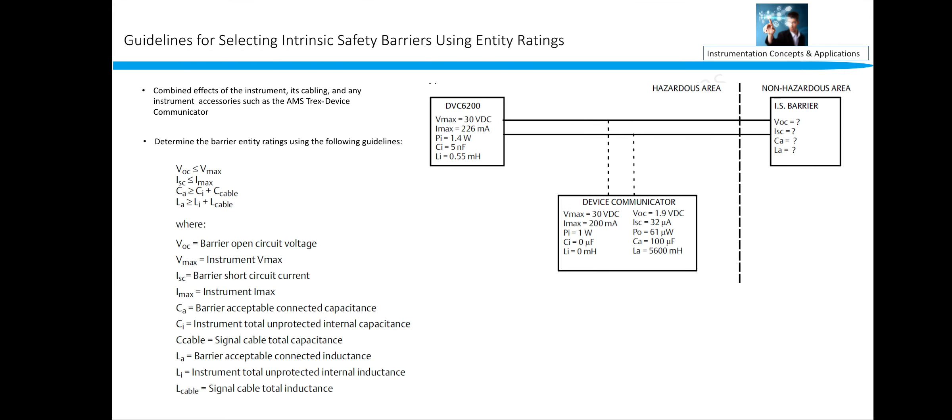This is the standard loop. This is non-hazardous area where we will be going to install our intrinsically safe barrier, and this is the hazardous area where, for example, we are using a DVC 6200 positioner, a Trex approved positioner. We need to consider this Trex device also to determine the barrier entity.